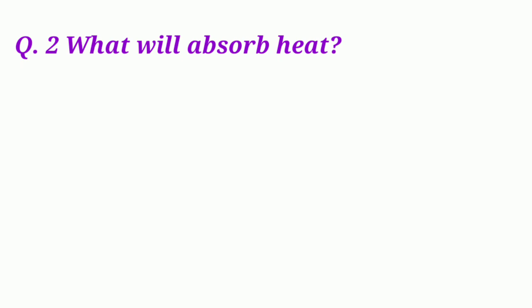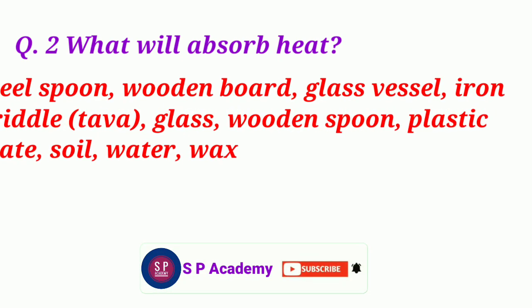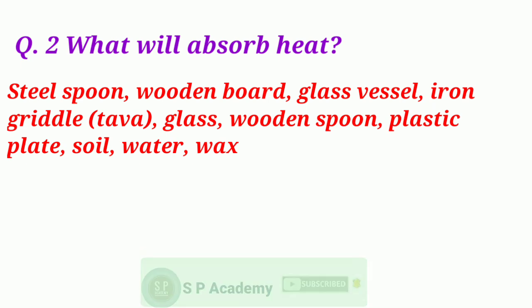Question No. 2: Classify the following materials as good conductors or bad conductors. Materials: Steel spoon, glass vessel, iron griddle, wooden spoon, plastic plate, soil, water, wax.